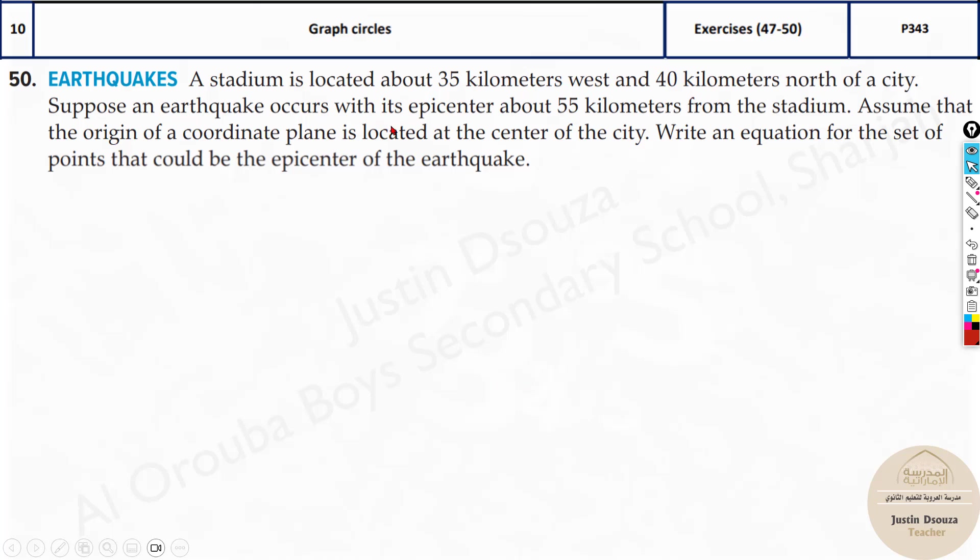Here, we have one more problem. It's the last one in this topic. Earthquakes. The stadium is located about 35 kilometers west and 40 kilometers north of the city. So, first thing, north, south, east and west. 35 kilometers west, it'll be minus left side. 40 north. That'll be plus.